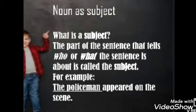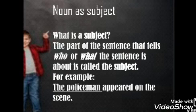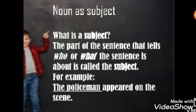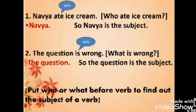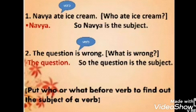For example: 'The policeman appeared on the scene.' Here, what is the sentence about? A policeman. So a policeman is the first part of the sentence. The second part says something about a policeman — that he appeared on the scene. The subject often says who or what performs the action that the verb refers to. For example, 'Navya ate ice cream.' Who ate ice cream? Navya. So Navya is the subject.